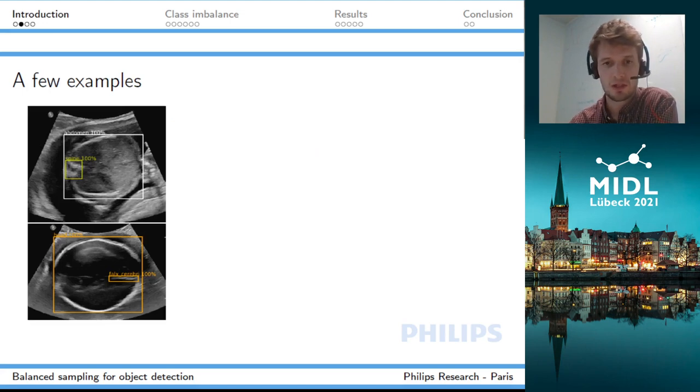Let me show you a couple images in our dataset. We are looking at 2D ultrasound images of the fetus. You can see here on the top image an abdomen of a fetus in which you can also see the spine, and the bottom image is an example of the head in which you can see a substructure called the falx.